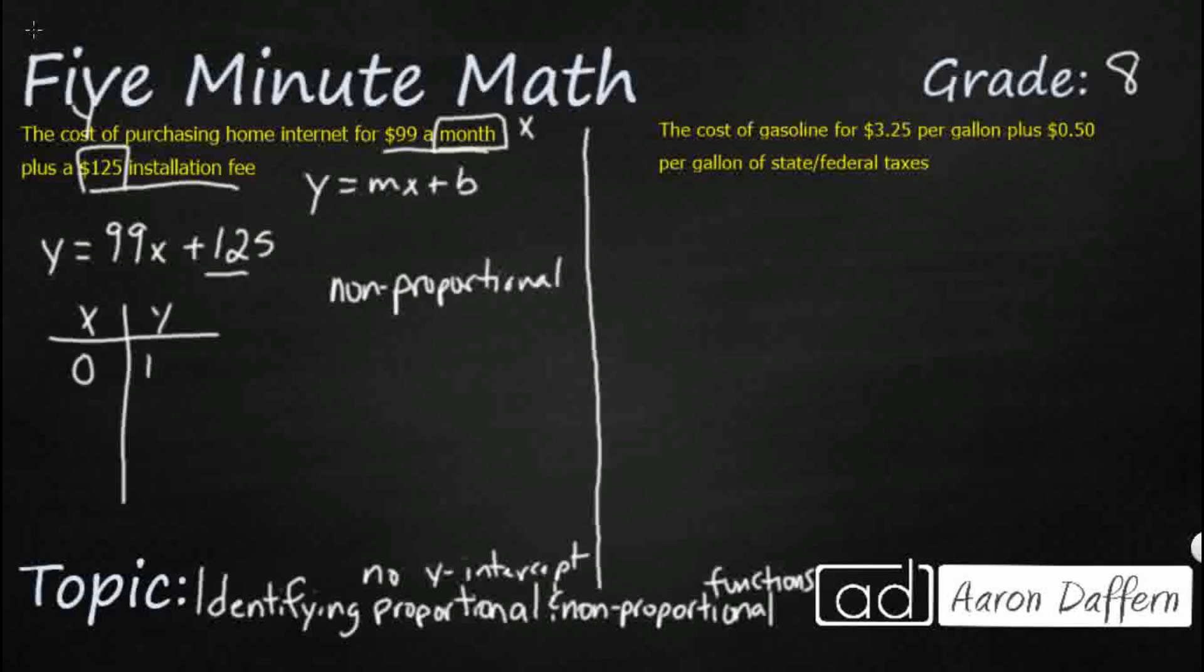And if x is 1, now we're going to pay that $224 and so on. So if we were to graph this, it would look something like this, and it doesn't go through the origin. So there's our origin right there.